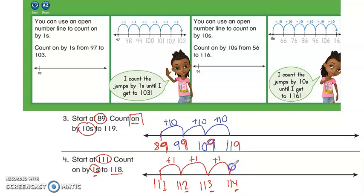You see, the ones place is what's changing. Plus one more, 115.